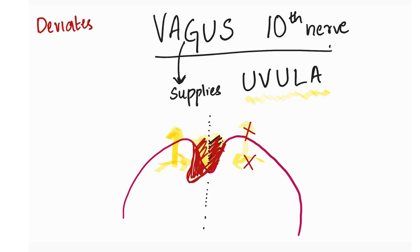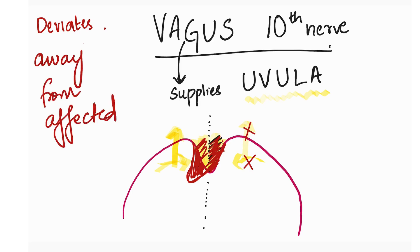Because the affected side is weak, the uvula moves or deviates towards the strong side — that is, away from the affected side. In the other two cases it was towards the affected side because the unaffected side was strong, but here the uvula shifts to the strong side and deviates away from the affected side.